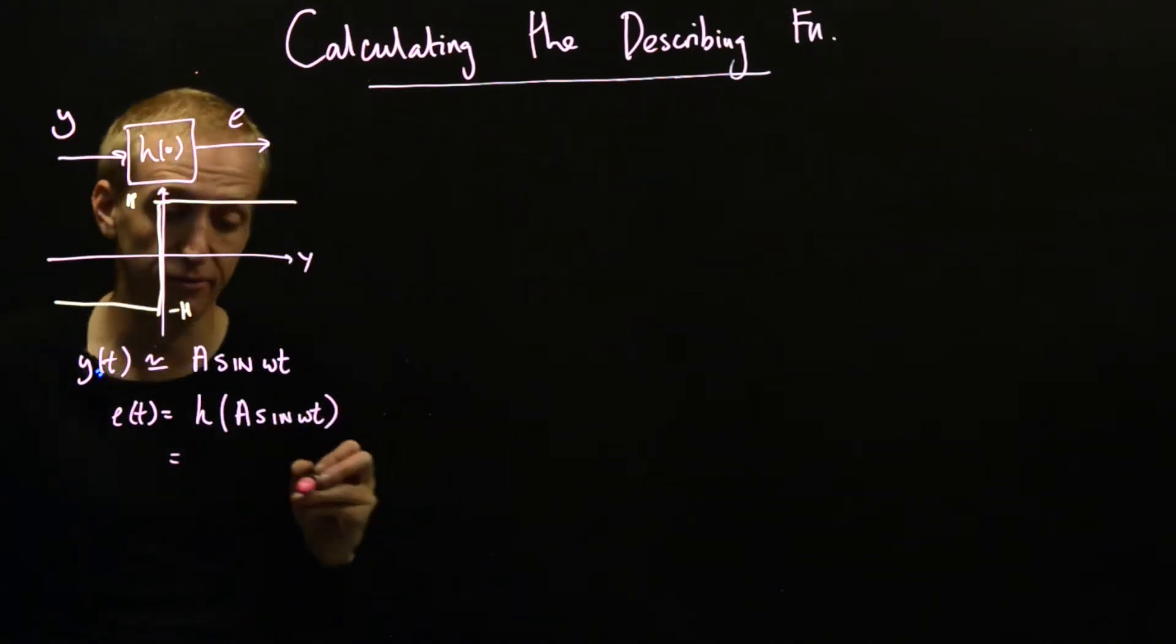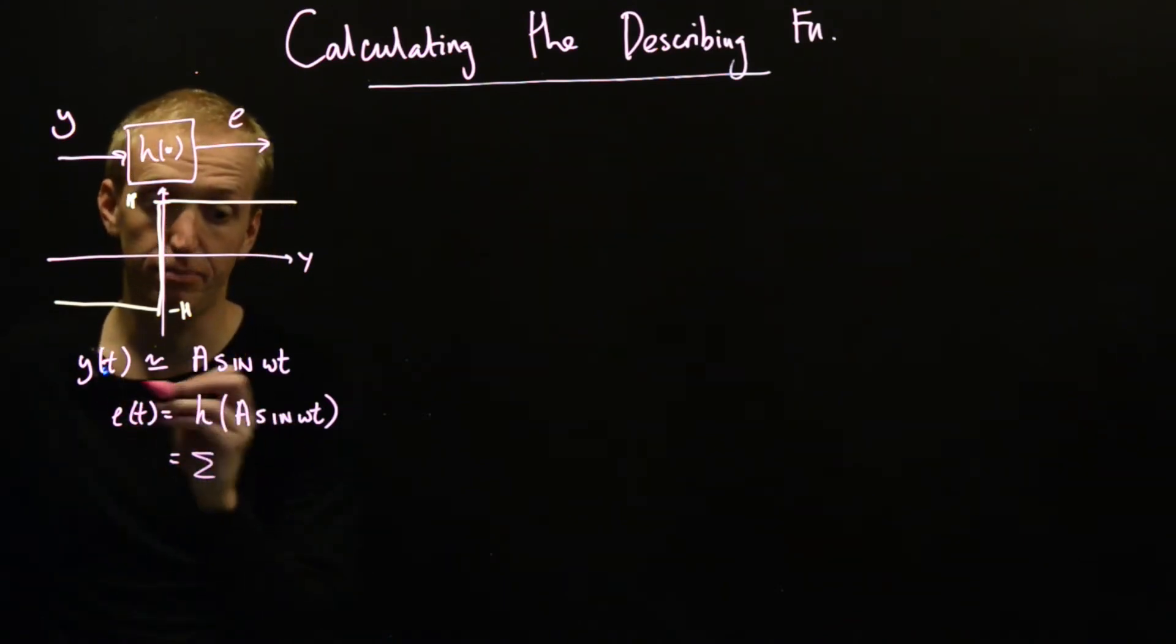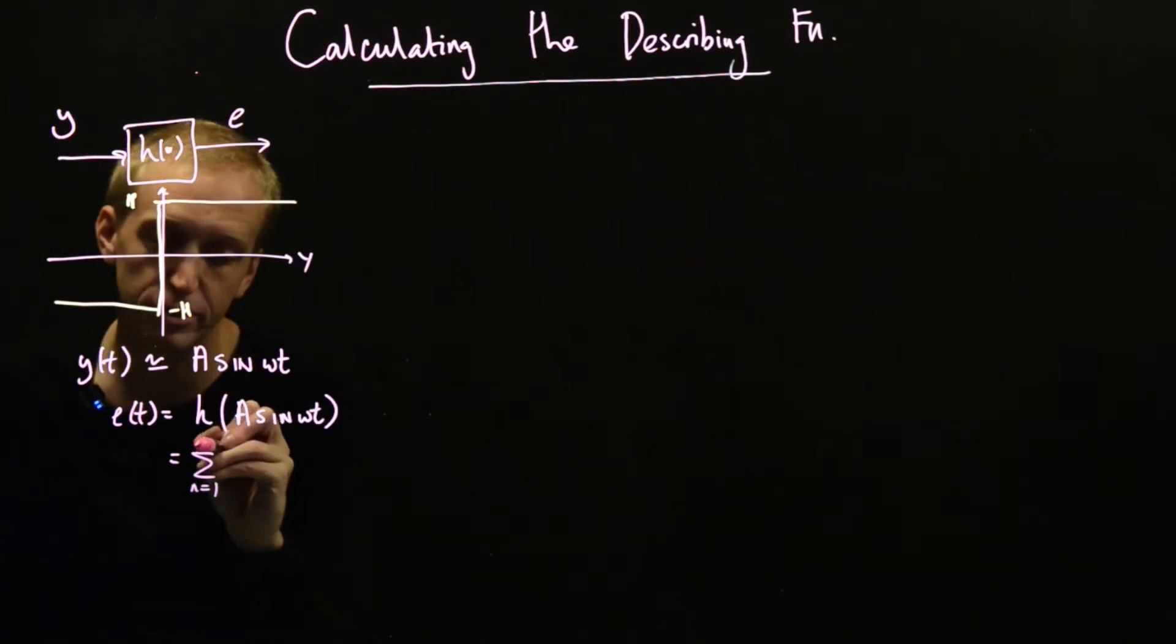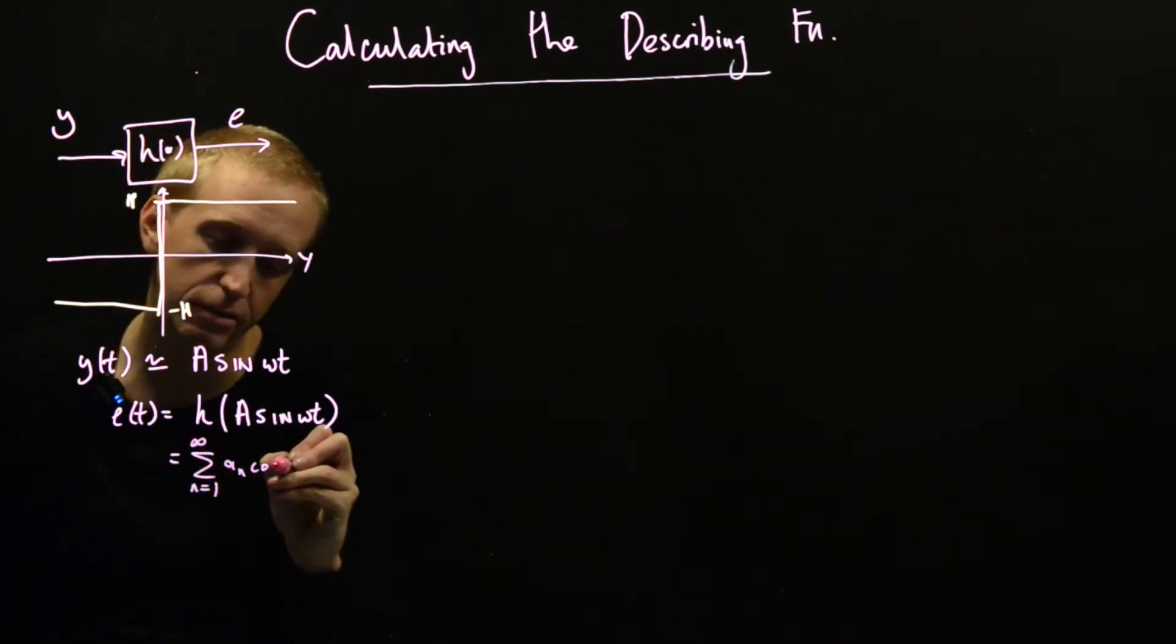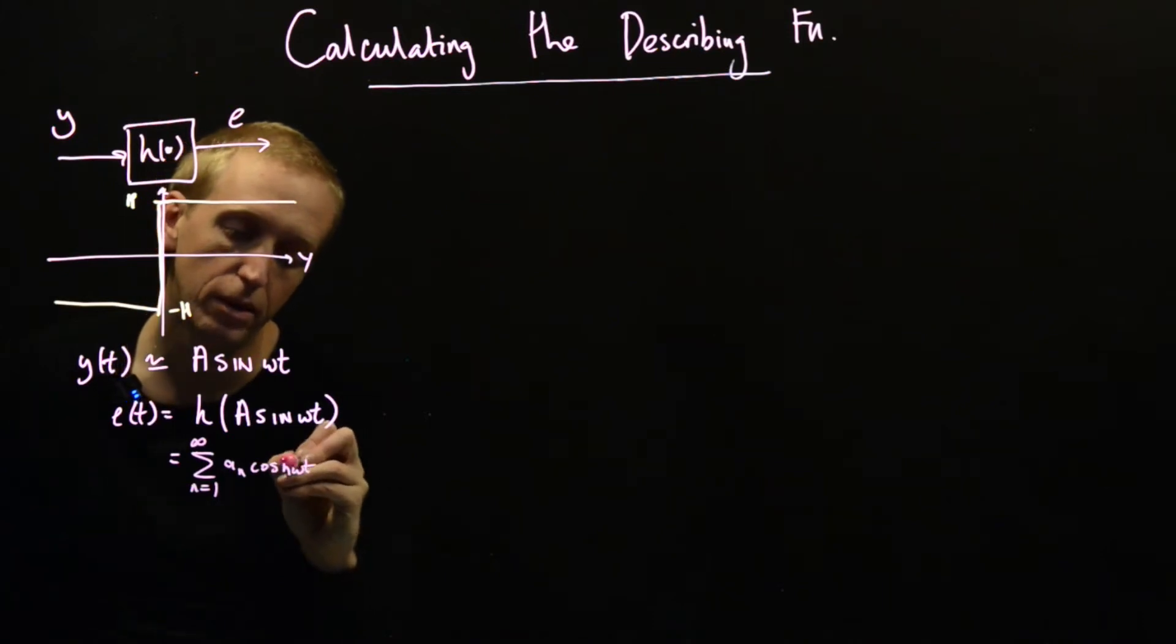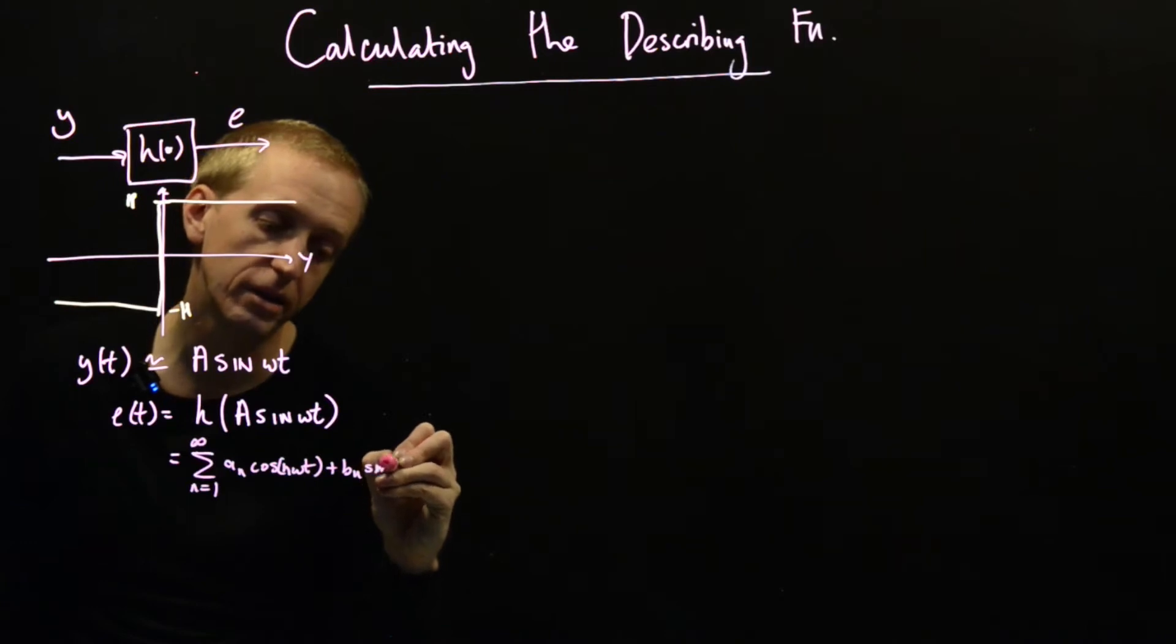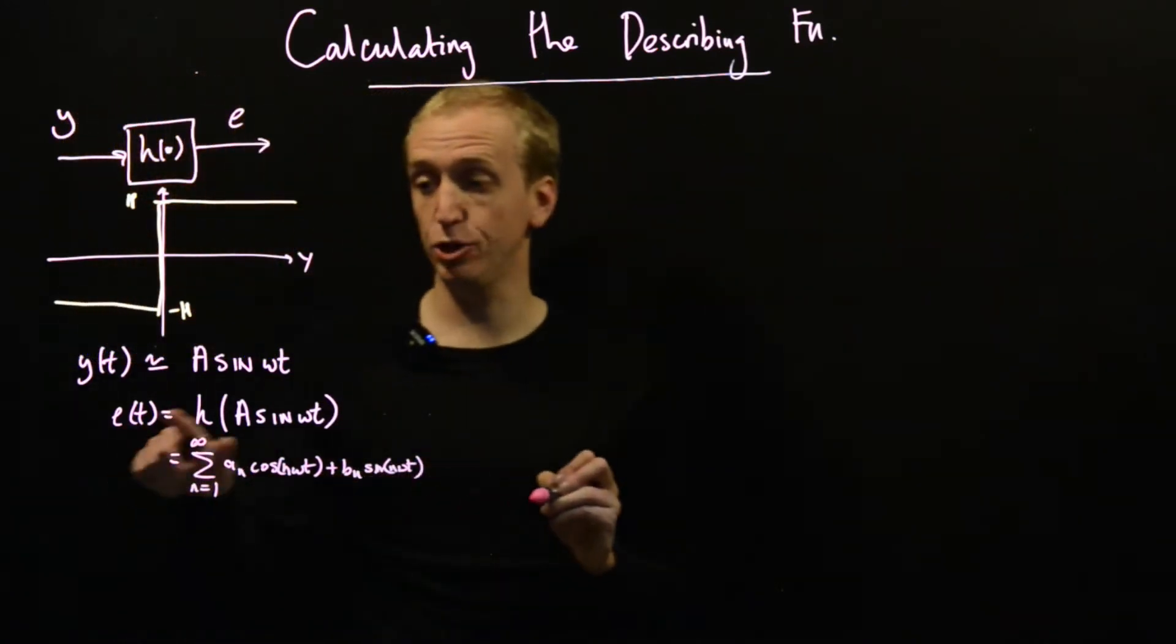And so e(t) is now some periodic function, and it has Fourier series on this form, where we have aₙ cos(nωt)'s plus bₙ sin(nωt)'s. So this is our Fourier series representation of e(t).